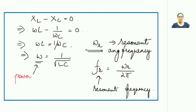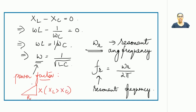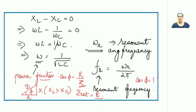From the impedance triangle, the power factor can be determined. For a series RLC circuit where XL > XC, R lies along the x-axis, the net impedance Z is the hypotenuse, and φ is the power factor angle. So cos φ = R/Z. Under resonance, Z_net equals R since the net reactance is zero, giving cos φ = 1 under series resonance.